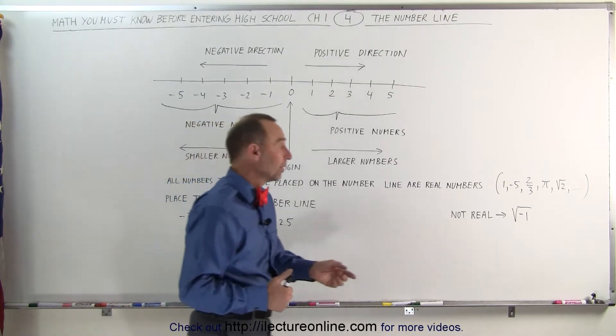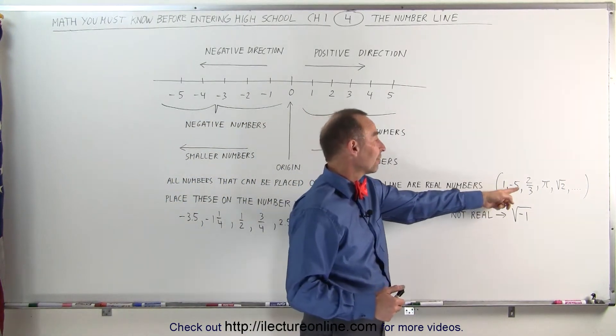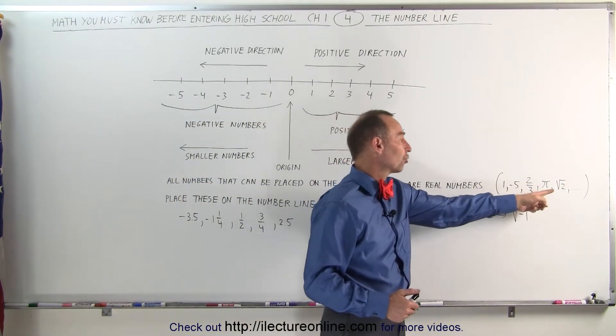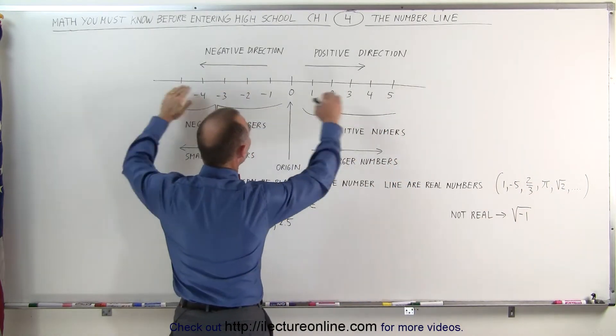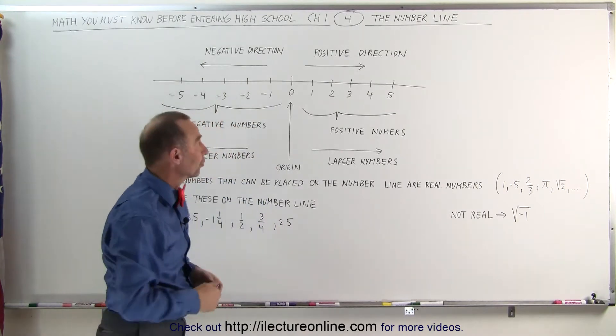Well here are some examples of them. The number 1, negative 5, 2 thirds, pi, the square root of 2, and so forth. All those numbers can be placed somewhere on the number line and therefore they're called real numbers.